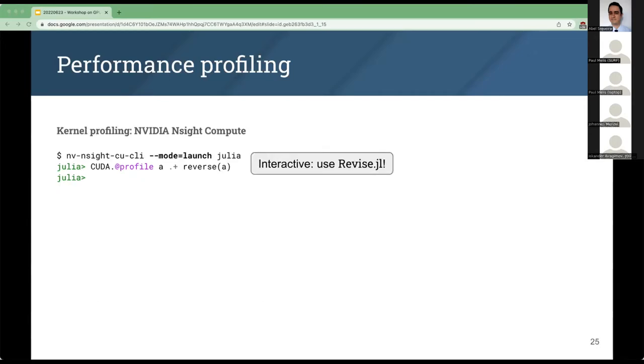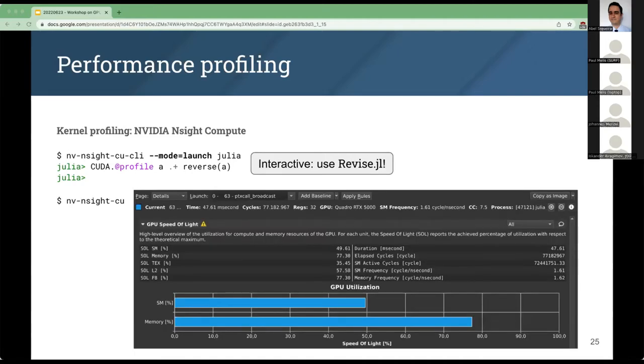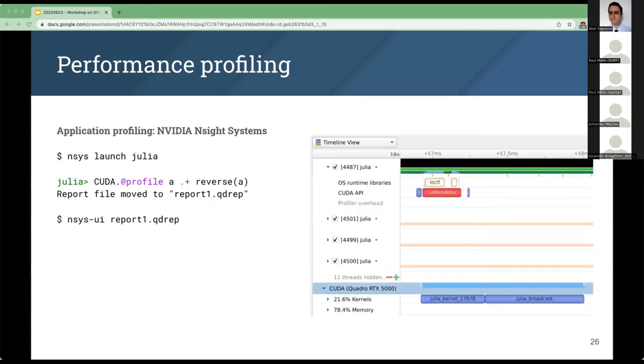The other tool I mentioned is Nsight Compute, but you generally shouldn't use this. Only when you want to do a deep dive optimization of a single kernel, you can use ncu with dash-dash mode equals launch, in which case you can do this interactively. It gives you plenty of gory details about what the hardware is doing and the utilization of the compute and bandwidth of the GPU. If you want more details on how to use this, in the CUDA.jl documentation there's a section on how to profile your application, and all of this is explained in detail.